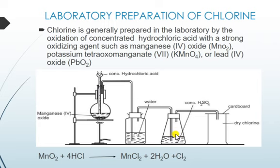The round-bottomed flask is connected to a wash bottle containing water, which is also connected to another wash bottle containing concentrated sulfuric acid. This second wash bottle is connected to a gas jar covered with cardboard, which is used to collect the dry chlorine gas.